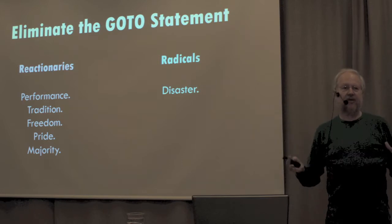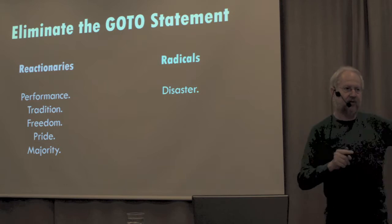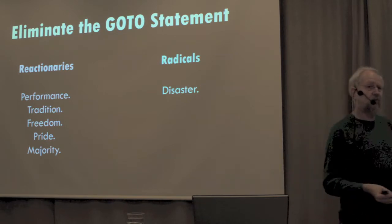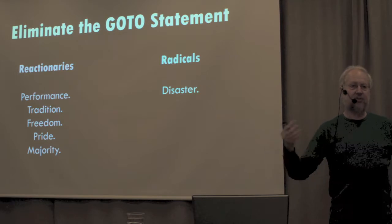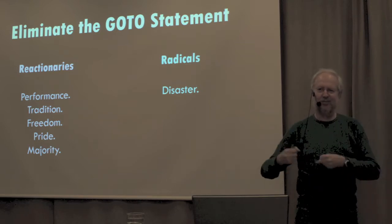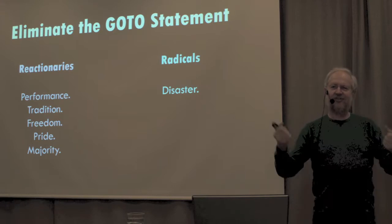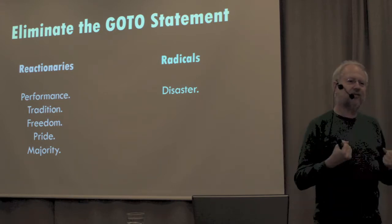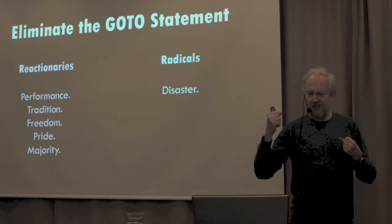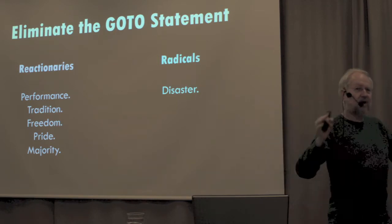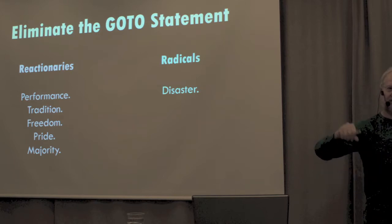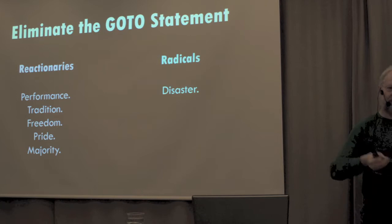We need it for performance. There are certain cases where in order to get our programs to go fast, we have to be able to jump from here to there. Anything else is going to degrade performance. And we have this tradition. We have always had Go-To in programming languages. You can't take this away from us. It's an essential tool. It's how we do our work. It's how we express ourselves. We need the freedom to write programs the way we see fit. You cannot take that freedom away from us. And then they started talking about pride. Dijkstra was saying we don't trust you guys to make good choices. And they said we're insulted. Of course we should be trusted. We should be allowed to make these choices.